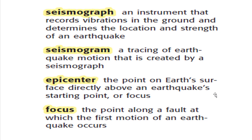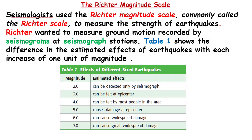The epicenter is the point on the Earth's surface directly above an earthquake's starting point, or focus. The focus is an important term — don't forget it. The focus is the point along a fault at which the first motion of an earthquake occurs. That means earthquakes start from the focus. The Richter magnitude scale — commonly called the Richter scale — is used by seismologists to measure the strength of earthquakes, that means the power of earthquakes.